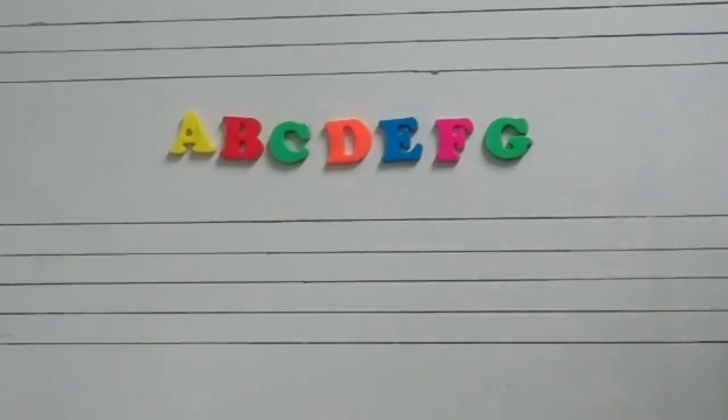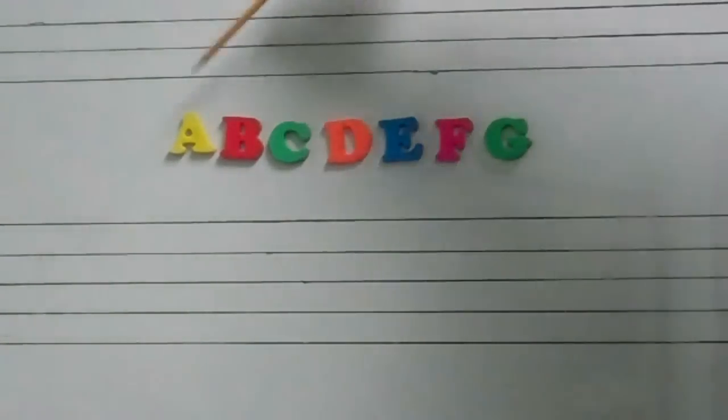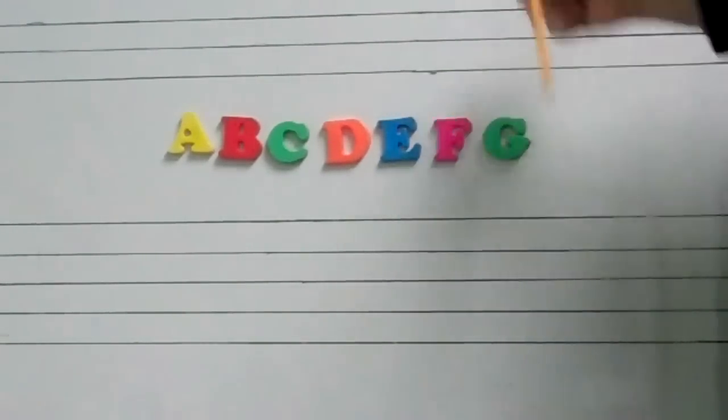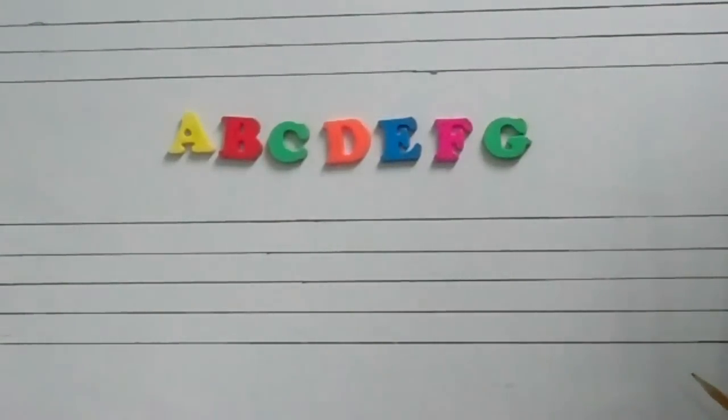In music, we use the first seven letters of the alphabet: A, B, C, D, E, F, and G. This is what's known as the musical alphabet.